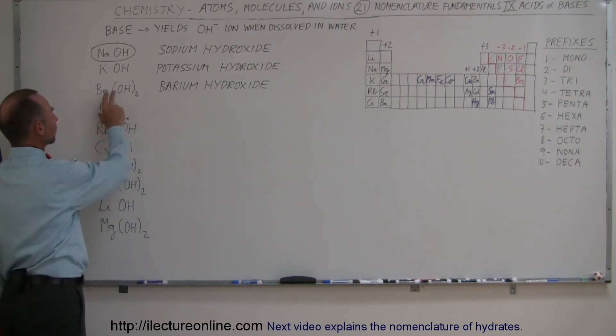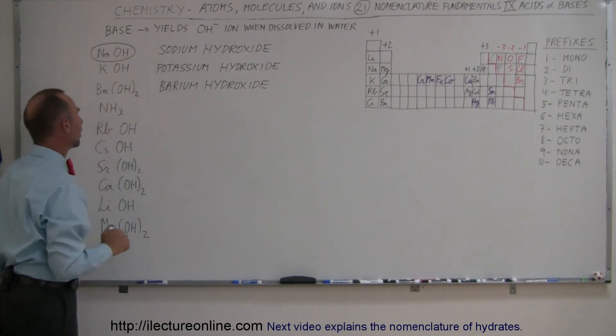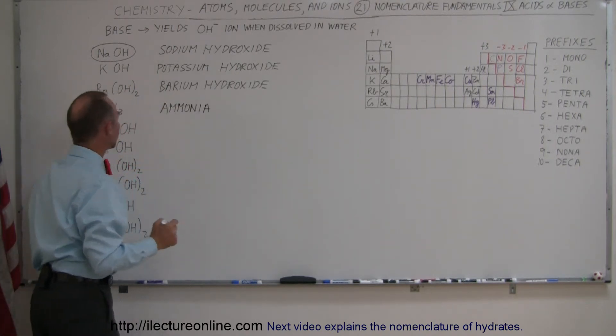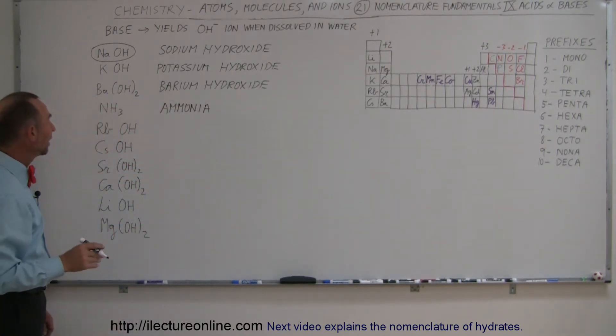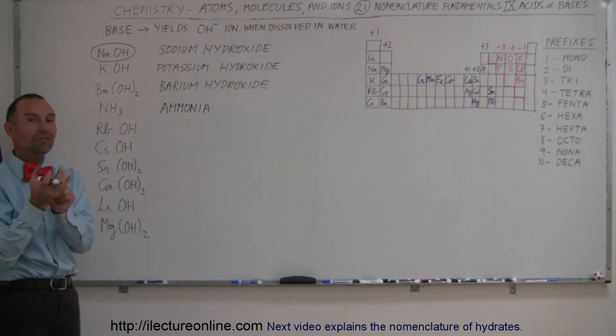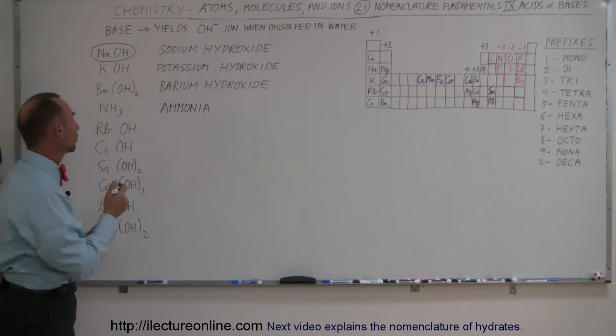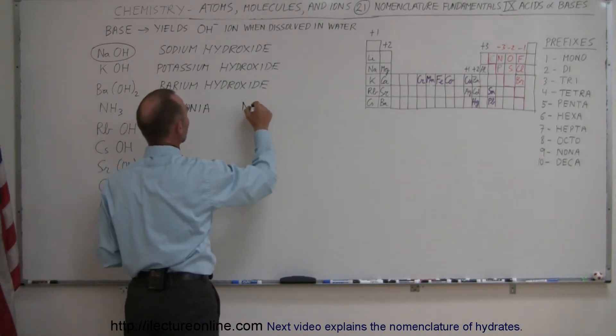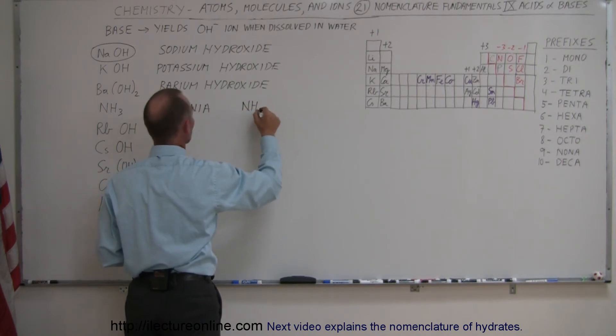Now in the case of this right here, notice that this is very different from all the other ones. It does have an OH in there. This is called ammonia. And the way ammonia becomes a base is that it has a very strong affinity to grab a hydrogen.